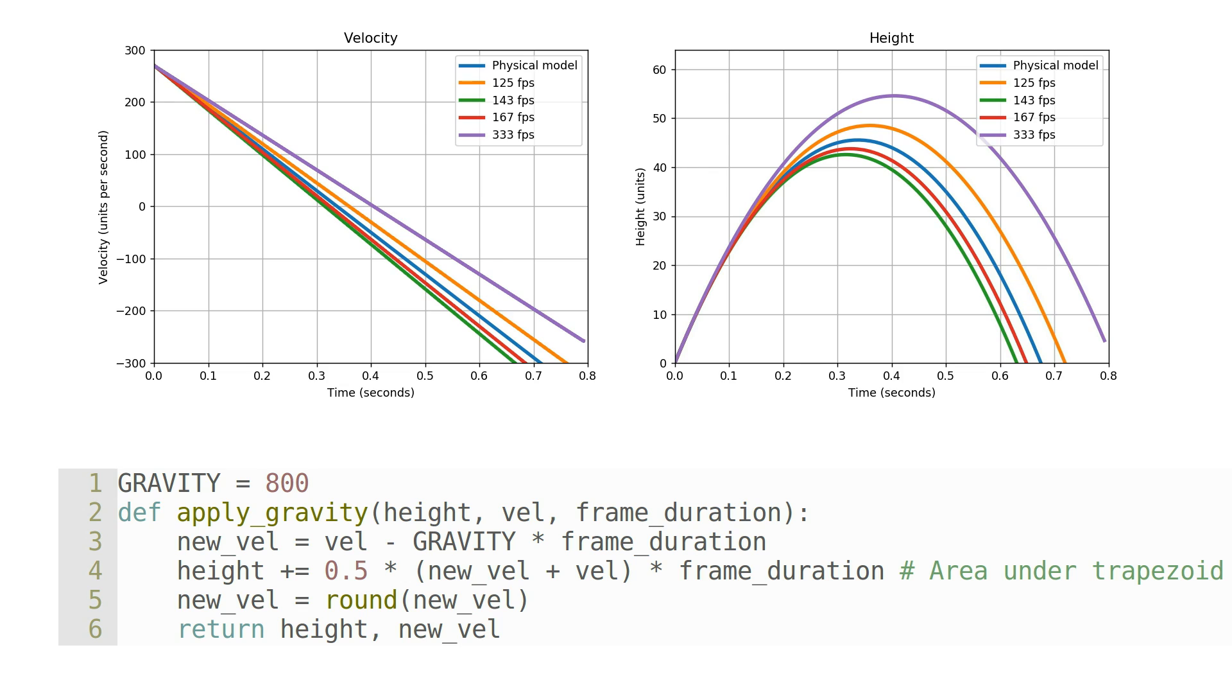125fps truly is the best option for playing online, however if playing locally, or on LAN, and your computer can achieve 333 frames per second, then you can enjoy much higher jumps with this setting.